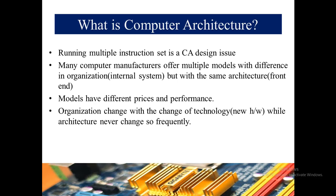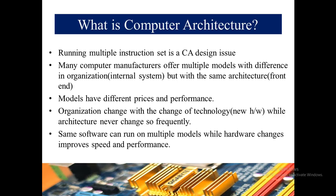As new hardware and technology are introduced to the market that are cheaper and faster, the organization of the computer changes automatically, while architecture does not change as frequently as organization does. The same software can run on multiple models — for example, Microsoft Office can run on Windows XP, Linux, and Windows — while hardware changes improve speed and performance.